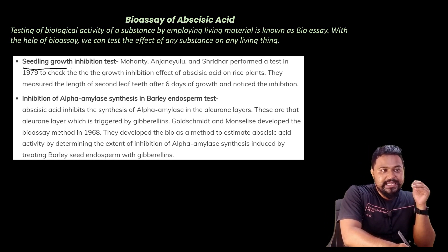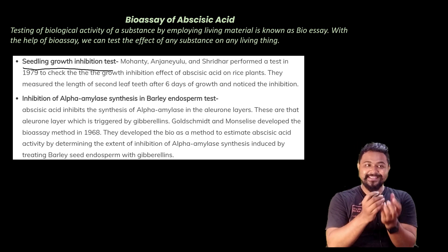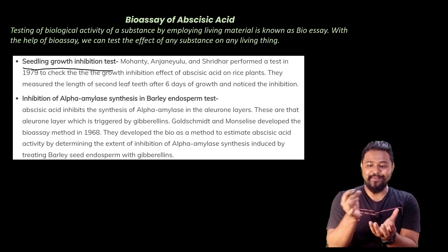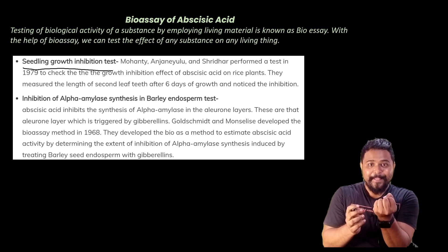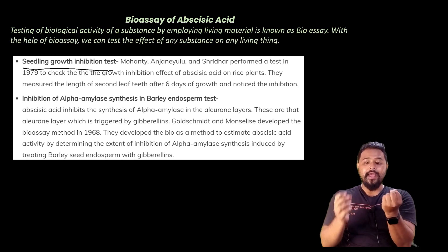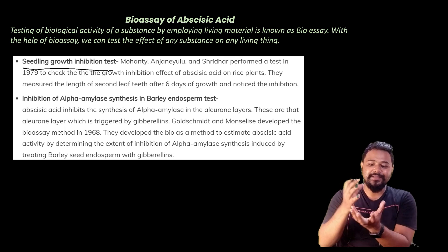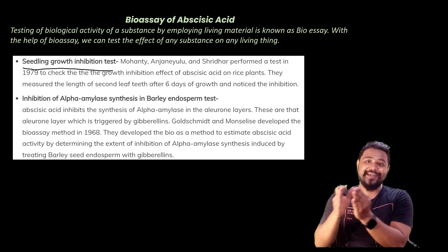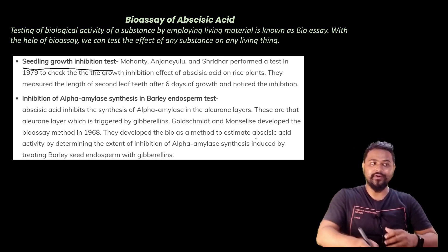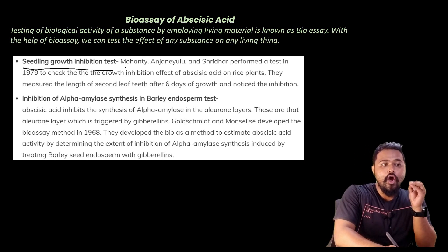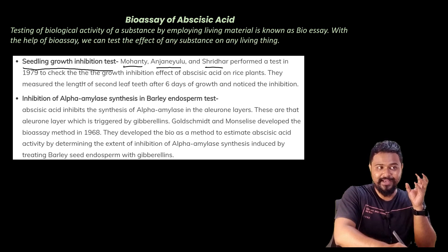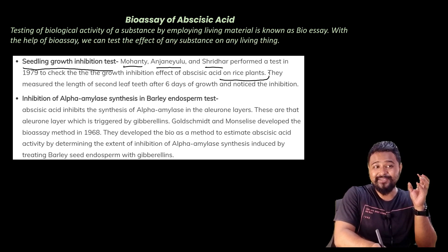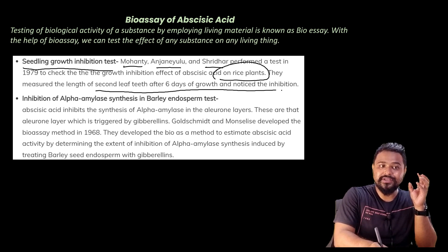The first bioassay is the Seedling Growth Inhibition Test. Mohanty, Anjaneyulu and Shridhar performed this test in 1979 to check the growth inhibition effect of abscisic acid on the rice plant.